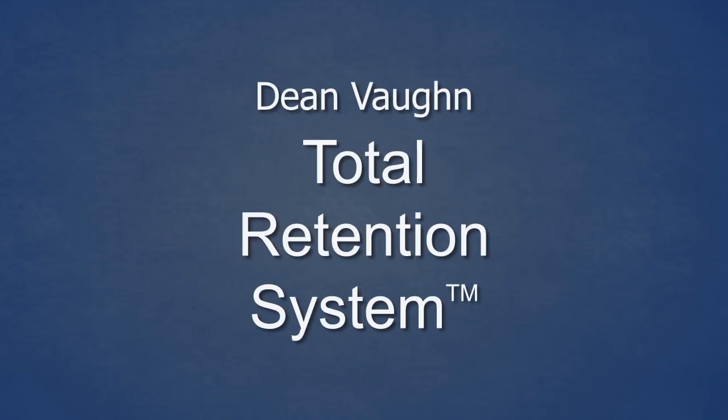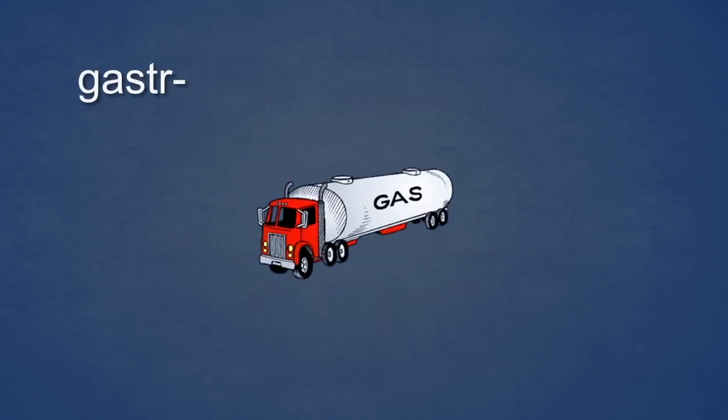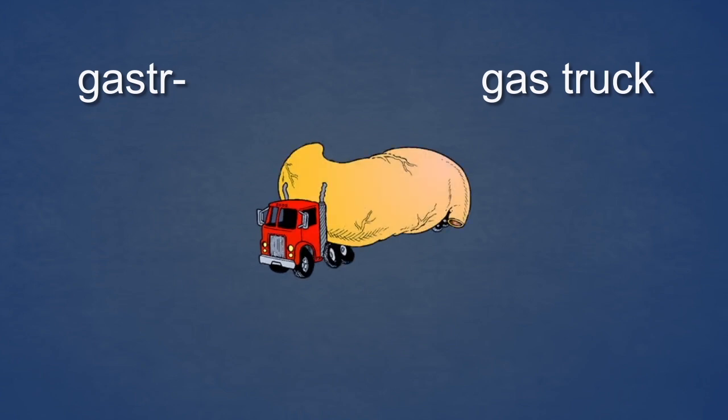An audionym is always something you can see. It is a unique and important part of the Dean Vaughan Total Retention System. For example, gaster sounds like gas truck — you can see a gas truck. Since gaster means stomach, the gas truck is associated with stomach in such an illogical way that you will surely not forget it. The gas truck has a real stomach for a tank. Just try to forget this — the more illogical the association, the easier it is to remember. Gaster. Gas truck. Stomach.